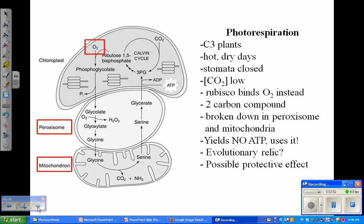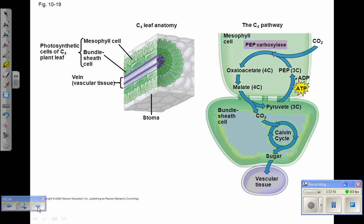The first set of plants that we're going to talk about are C4 plants. C4 plants are sugarcane, corn, and grass. They're plants that grow in hot regions that have intense sunlight.